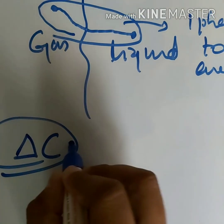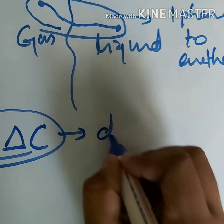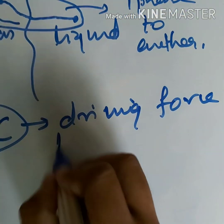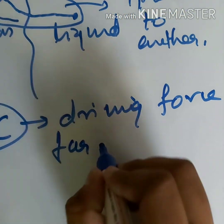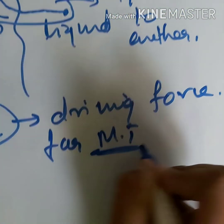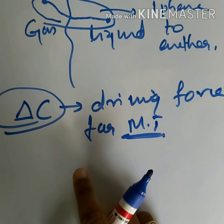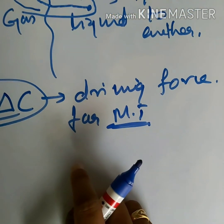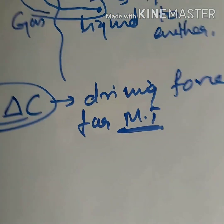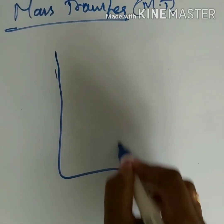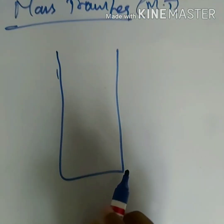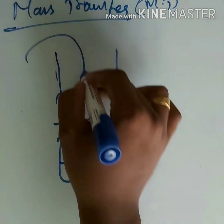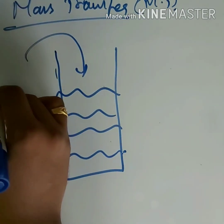The driving force for mass transfer is the concentration difference. For example, take a beaker filled with water and add some lumps of sugar to the liquid medium.